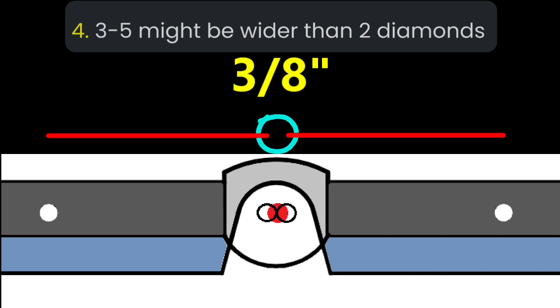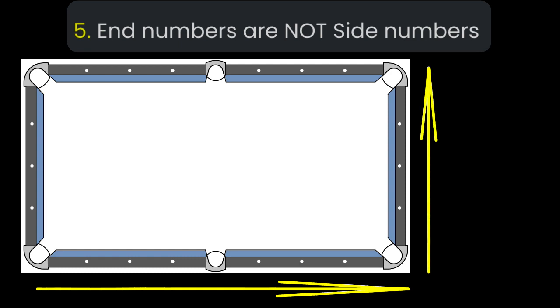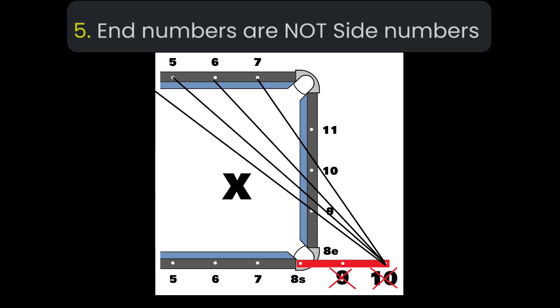A final flaw with the diamond system is it appears like once you get to the end of the side rail diamonds, you can just wrap around and go up the end rail diamonds. And while we tend to number them that way, it should be pointed out that the end diamonds do not line up with the side diamonds, so they mean something different. If you want more on this, check out my end numbers are not side numbers video.